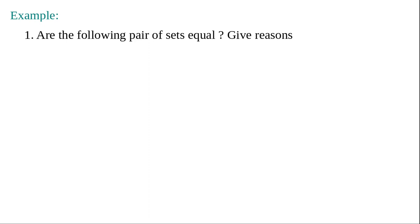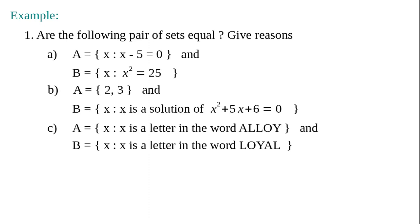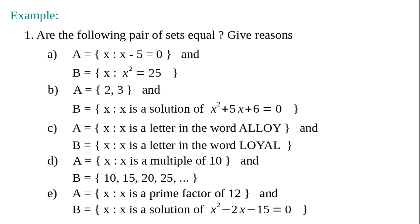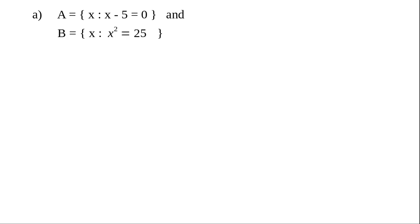Now let us do a simple example: 'Are the following pairs of sets equal? Give reason.' There are five questions (a–e); I will work out questions (a) and (b); questions (c), (d), and (e) are assignment for you. Question (a): A equals the set of x such that x − 5 = 0, and B equals the set of x such that x² = 25. What is A? x − 5 = 0 means x = 5, so A = {5}, containing only one element.